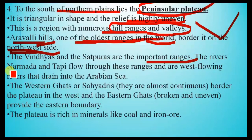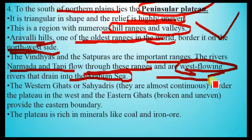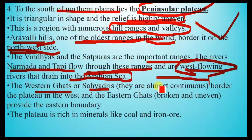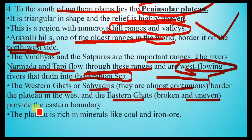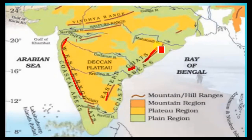The Vindhyas and the Satpuras are important ranges. The rivers Narmada and Tapi flow through these ranges and are west-flowing rivers that drain into the Arabian Sea — an exception, since most peninsular rivers flow towards the east and drain into the Bay of Bengal. The Western Ghats or Sahyadris are almost continuous and form the western boundary, while the Eastern Ghats are broken and uneven and provide the eastern boundary of the plateau.